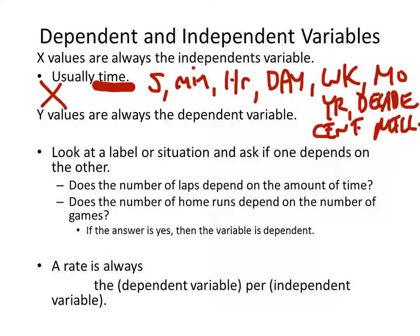Y values are dependent, which is why you have something like miles per hour. Miles depends on how many hours have passed, because it's speed. Y values are always the dependent variables.